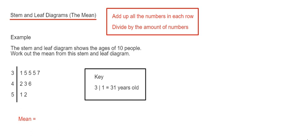To work out the mean, we need to add up all the numbers in each row on the stem and leaf diagram and then divide by how many numbers we have. The stem and leaf diagram shows the ages of 10 people. Work out the mean age from the stem and leaf diagram.